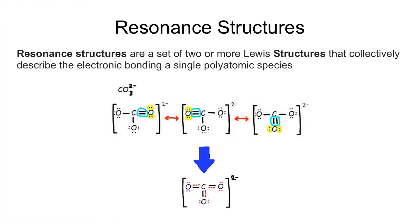So what a resonance structure is, is it's a set of Lewis structures that when you put them together they describe the actual structure of the molecule or the ion. This example here shows carbonate. A carbonate anion has one double bond, and so you can put the double bond here, or you can put it here on the left, or you can put it here on the bottom.